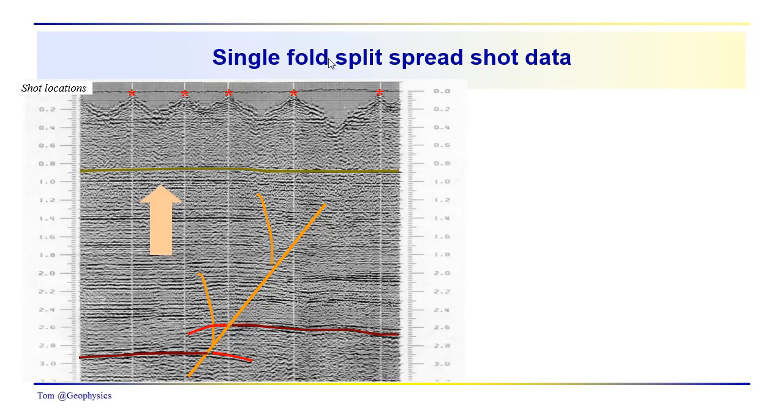Last time we presented some single-fold split-spread shot data. And these would be the individual shots. This would be the spread for an individual shot from one end to the other. So we just have a series of geophones laid out along the surface, and we've acquired data at increasing offset.